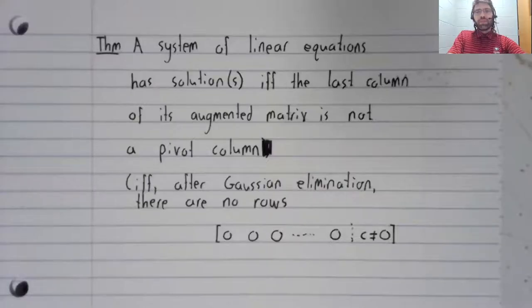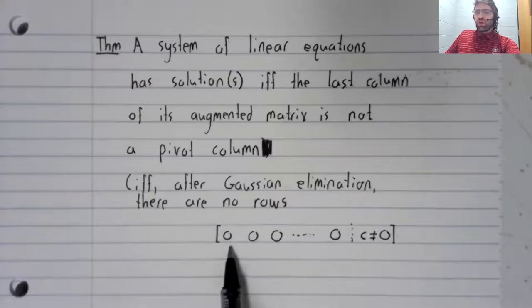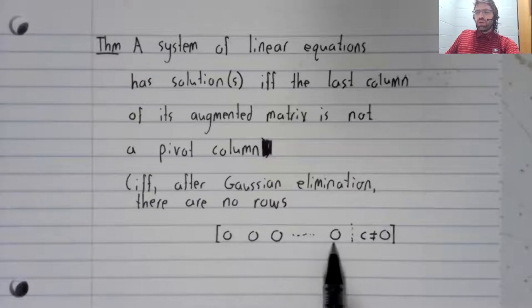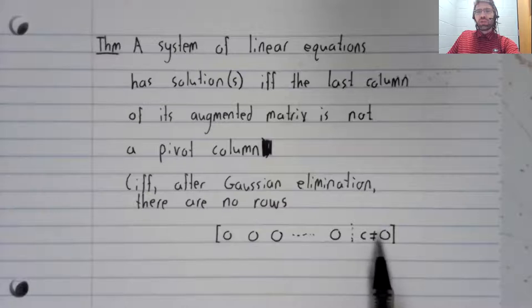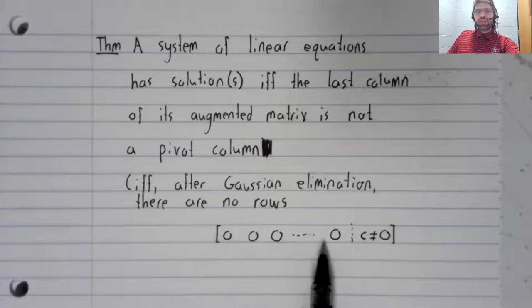That is to say, if and only if, after we perform Gaussian elimination, we don't get any rows that are all zero except for a single non-zero element. Rows that look like this stop solutions from existing.